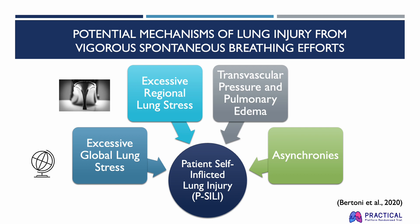Next is the Pendeluft effect, which involves inspiratory efforts that generate large transpulmonary pressure swings in dorsal consolidated regions, causing air to move from non-dependent to dependent regions, therefore increasing lung stretch in dependent areas.